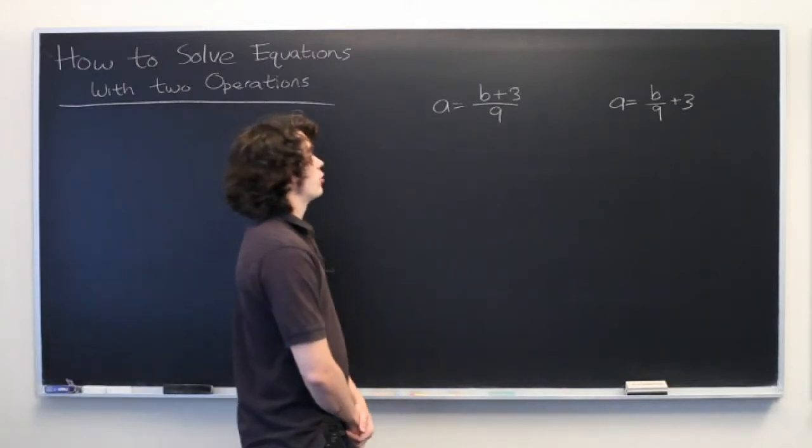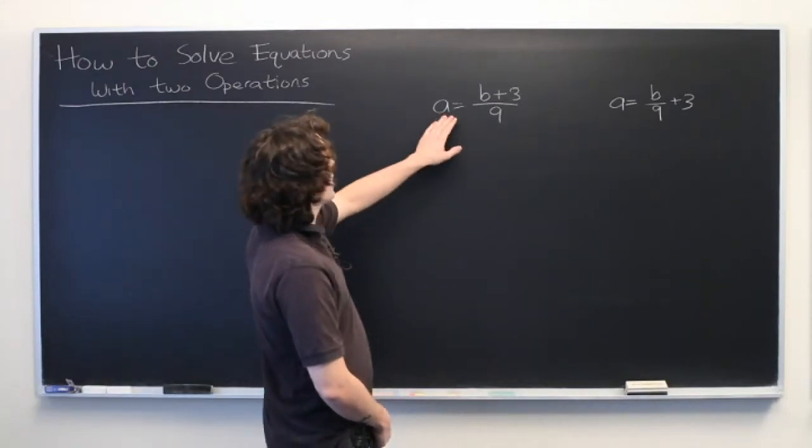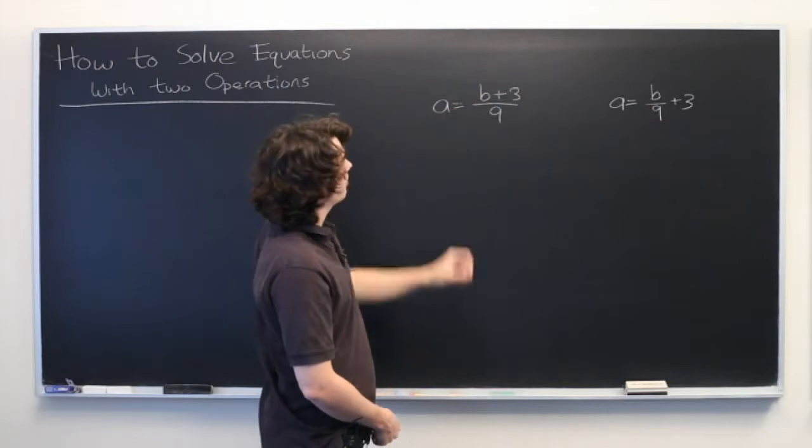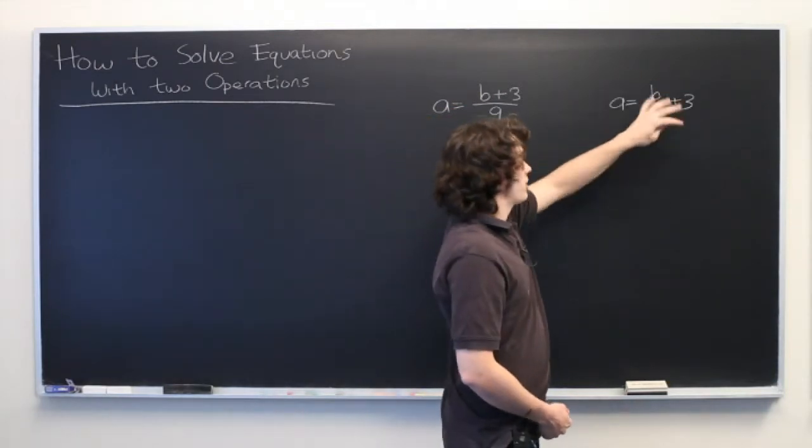Here we have two different linear equations that look similar. a equals b plus 3 all over 9, and a equals b over 9 plus 3.